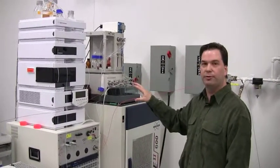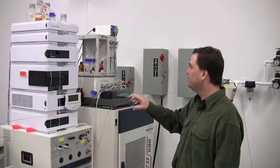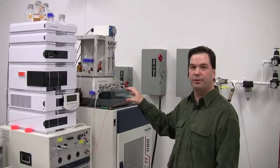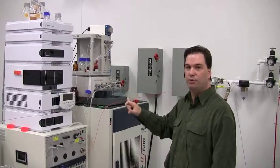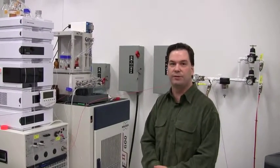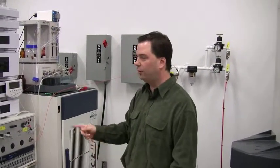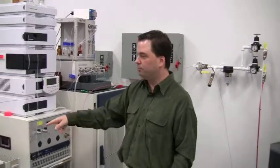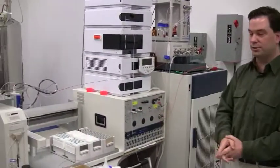Once we trap the material on the solid phase extraction cartridges, we could dry the cartridges down and remove the source of protonated solvents. Then we could elute them with a very small amount of deuterated solvent either directly to the NMR via our flow cell, or we could actually send it over and load NMR tubes using the Gilson sample handler.